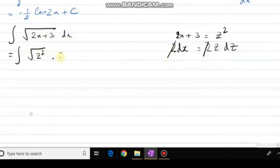And my dx is z dz. So it will be root over of z square is z into z, z square. So it will be integration of z square dz. So that will be z cube divided by 3 plus c.